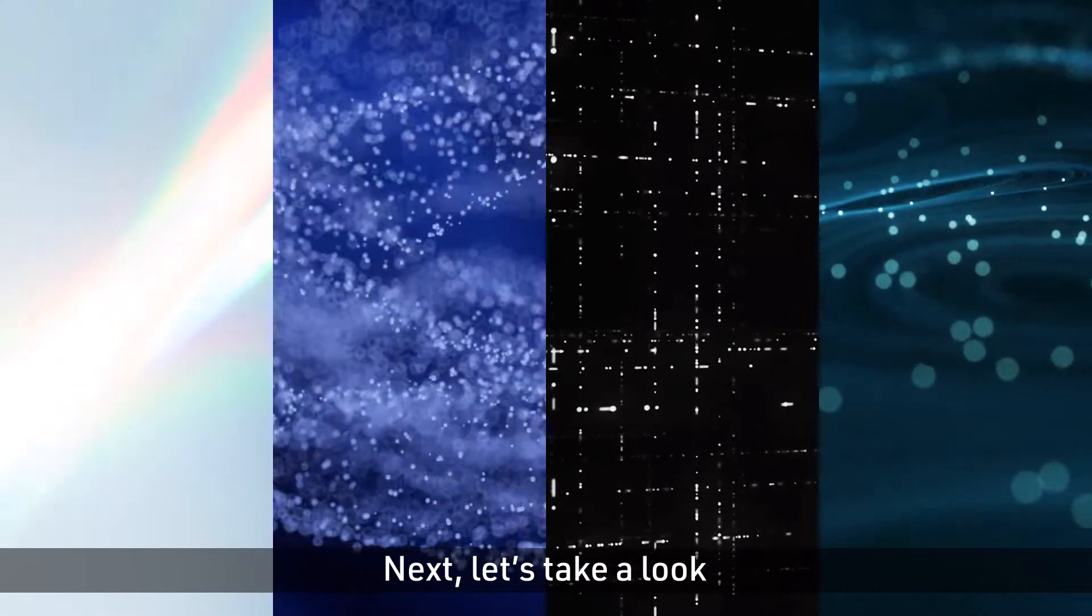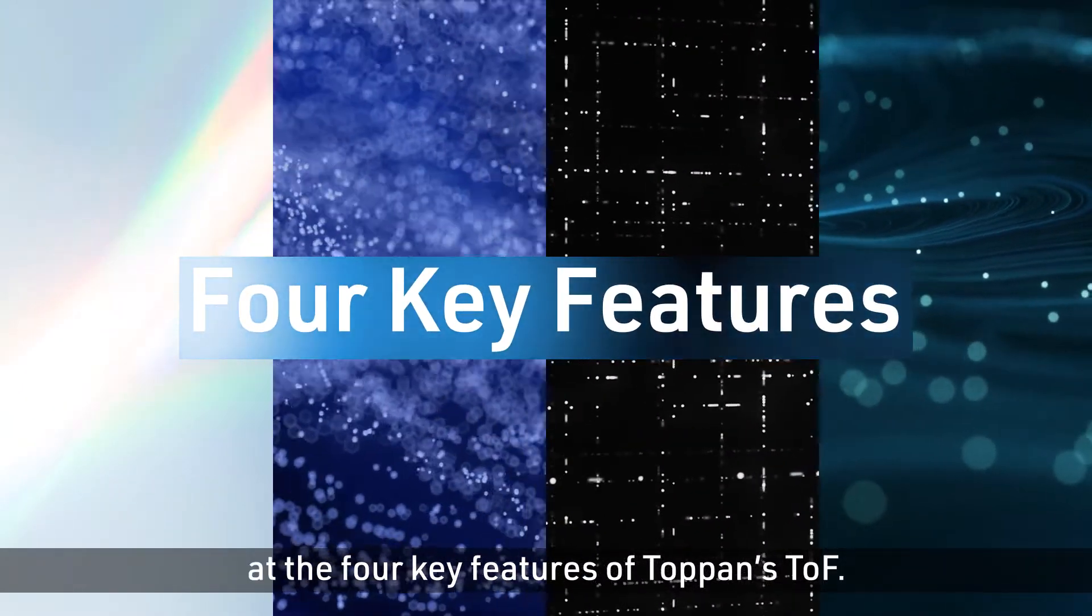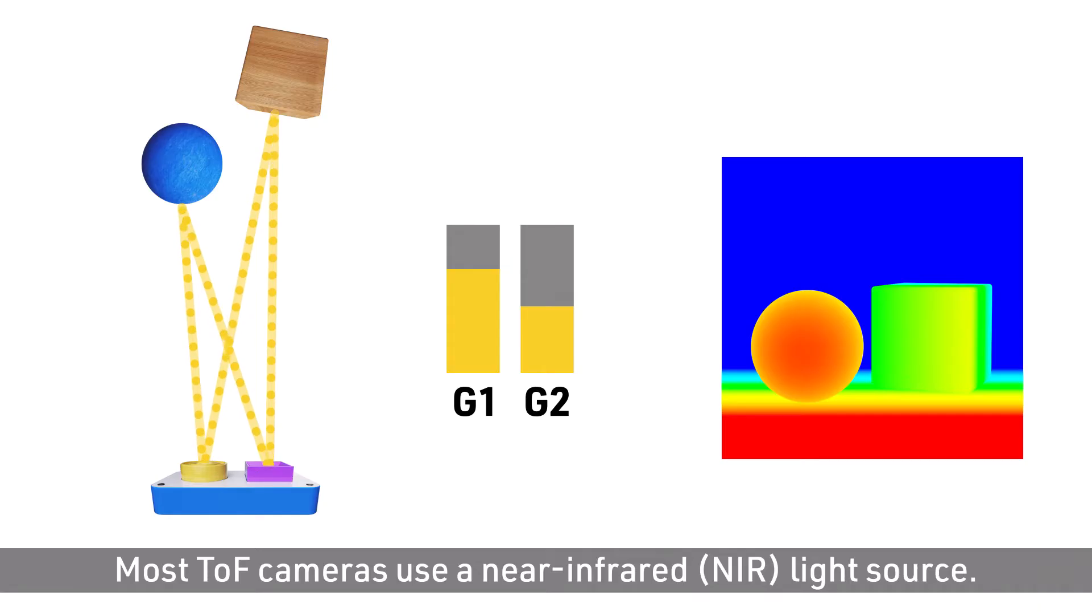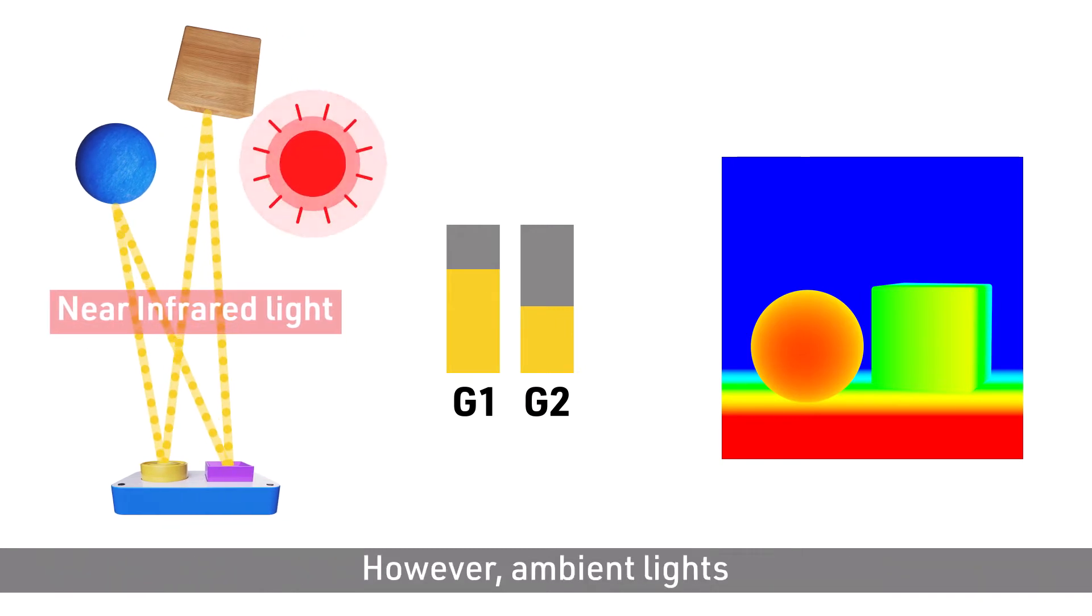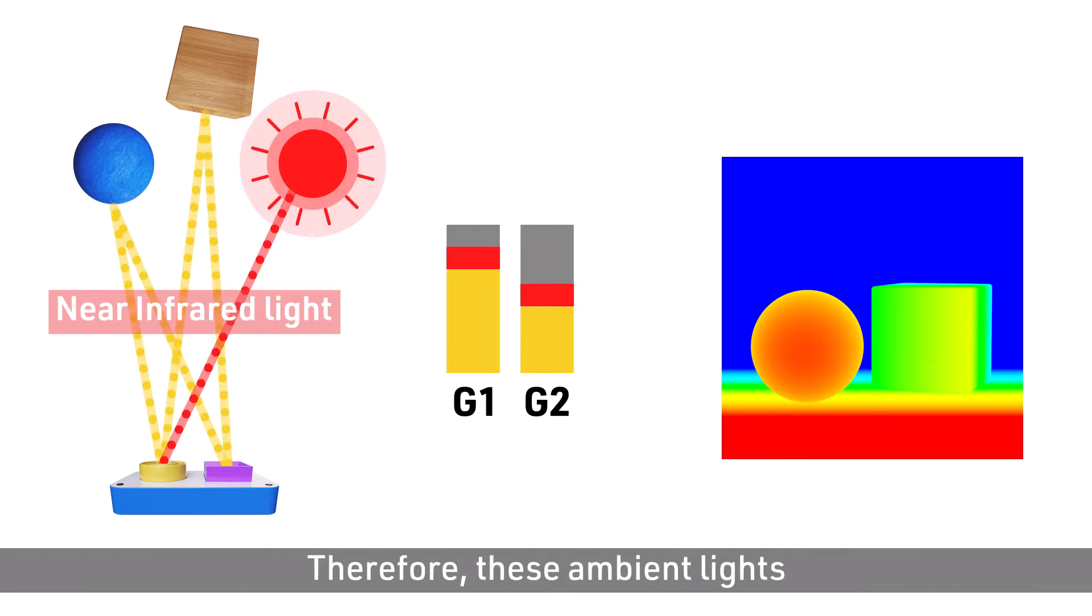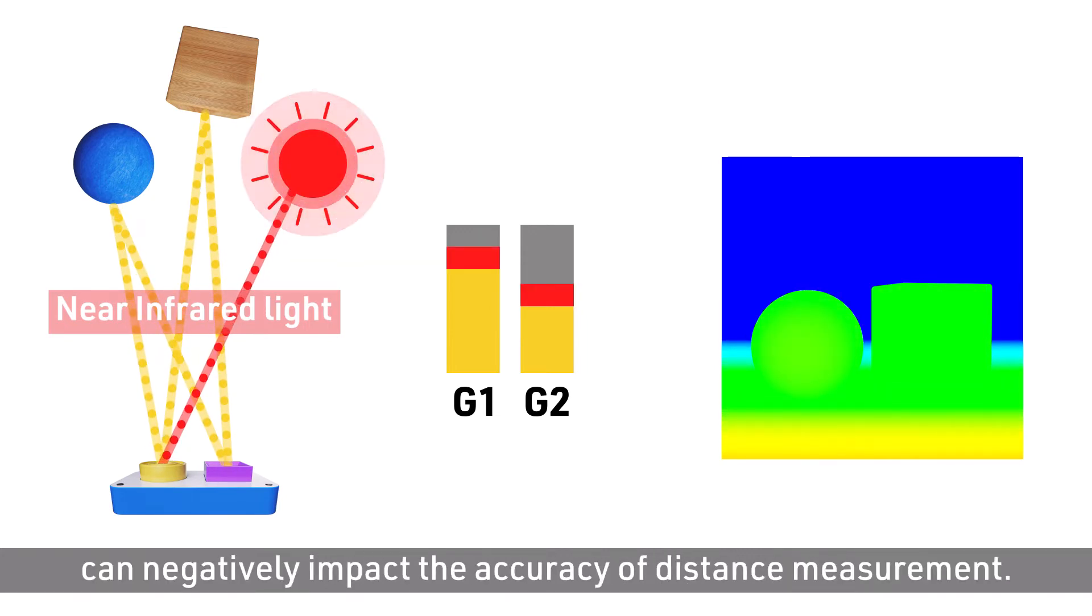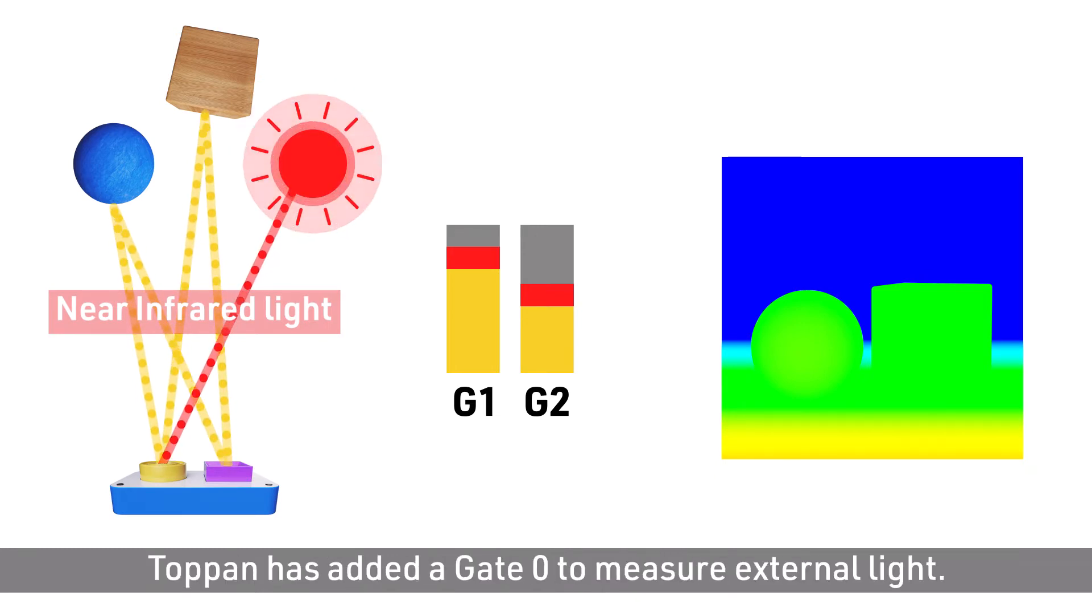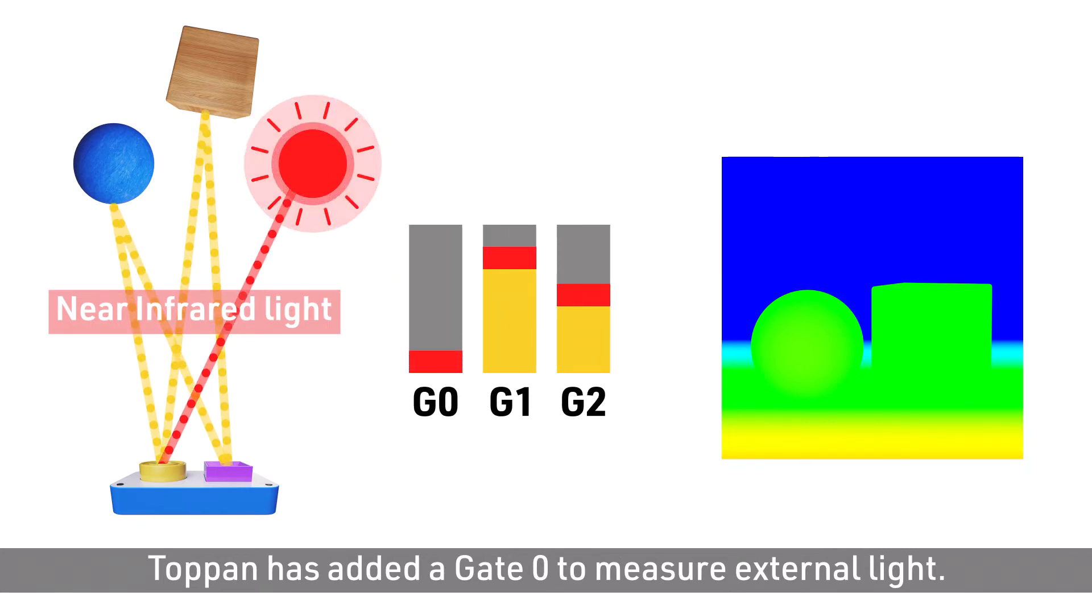Next, let's take a look at the four key features of Toppan's TOF. Most TOF cameras use a near-infrared NIR light source. However, ambient lights such as halogen lamps and sunlight contain NIR. Therefore, these ambient lights can negatively impact the accuracy of distance measurement. To cope with this problem, Toppan has added a gate 0 to measure external light.